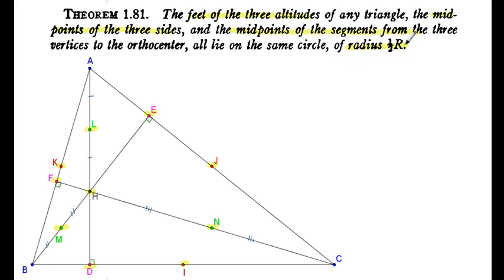It is highlighted that this circle has radius half the size of the circumradius of triangle ABC. Now, in this picture we have quite a few midpoints, which suggests we can easily find some parallel lines and equal line segments. The trick is to use the appropriate ones that give us the result we need.